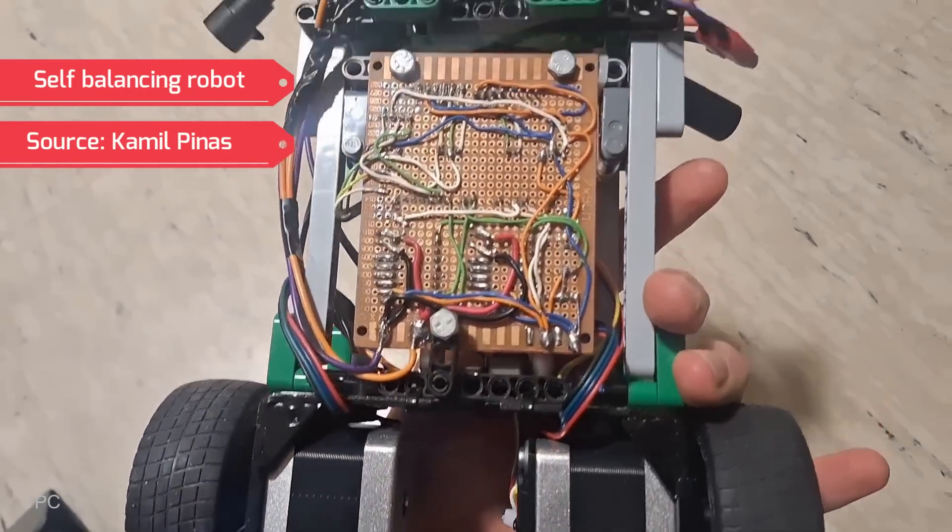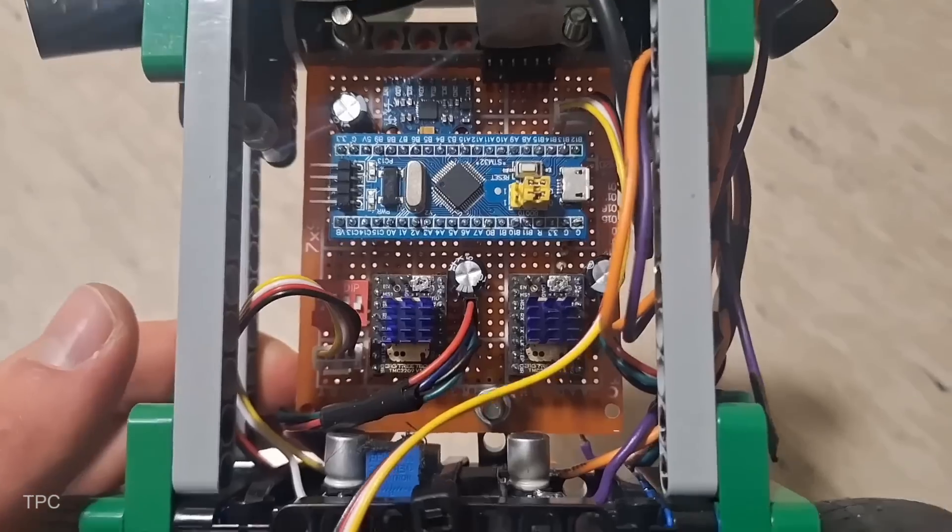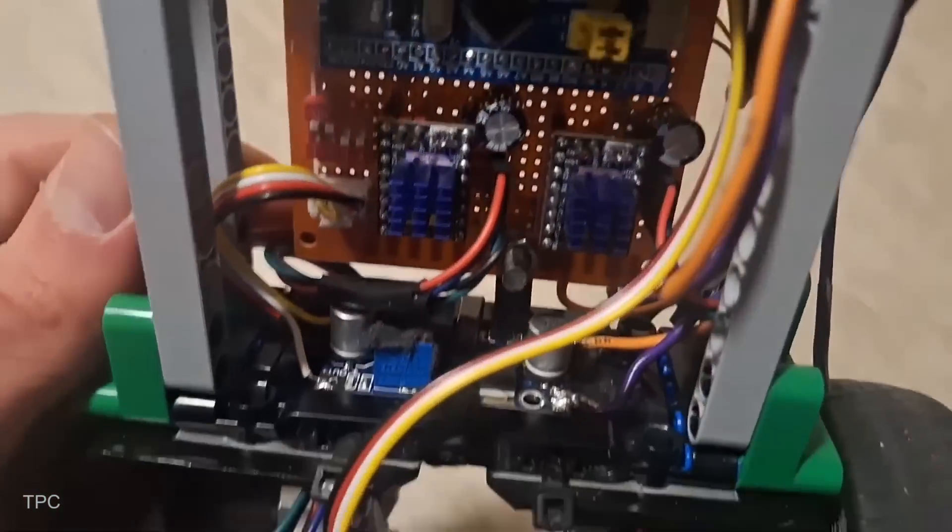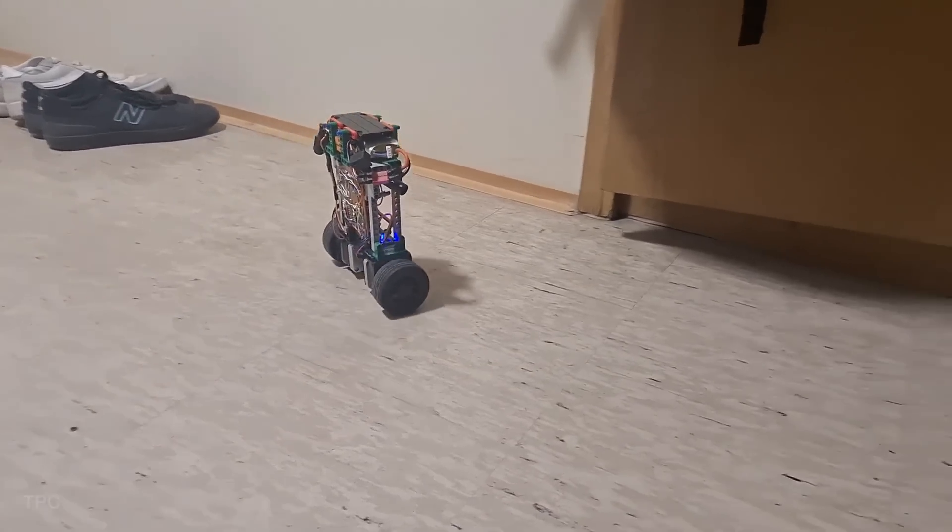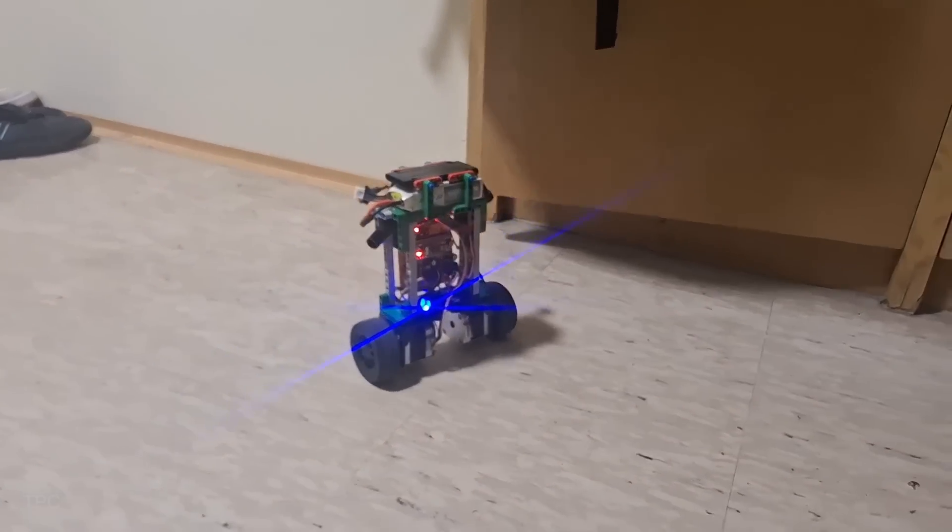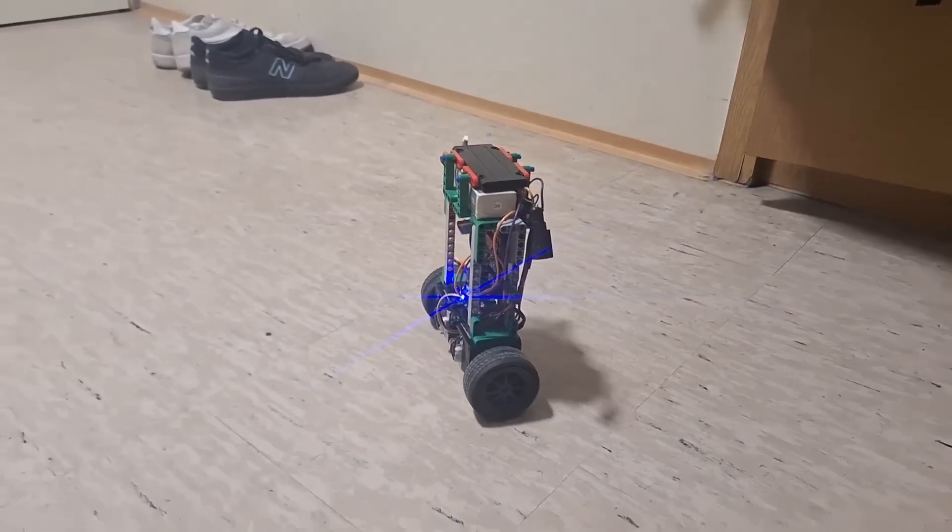Number 12. Camille set out to build a self-balancing robot using an STM32 blue pill as the main controller. To measure the angle and maintain stability, he used an MPU-6050 sensor, which provides real-time motion data.